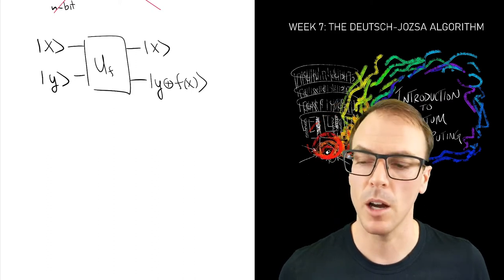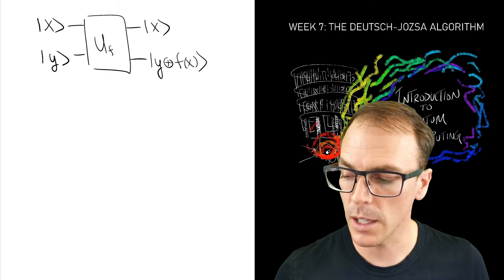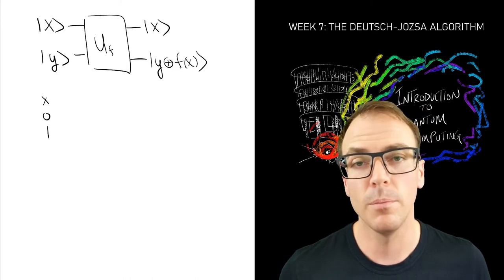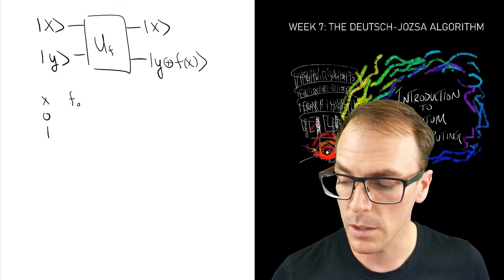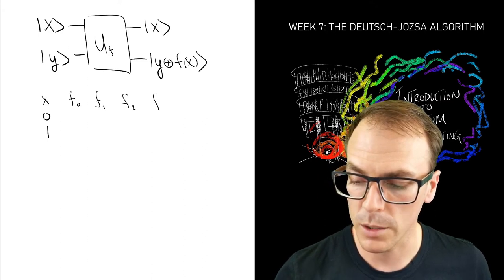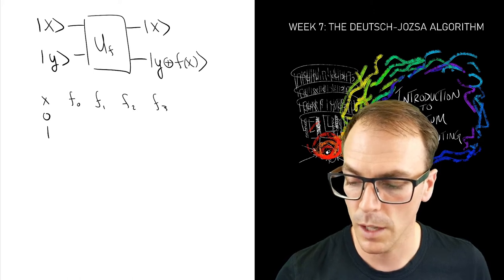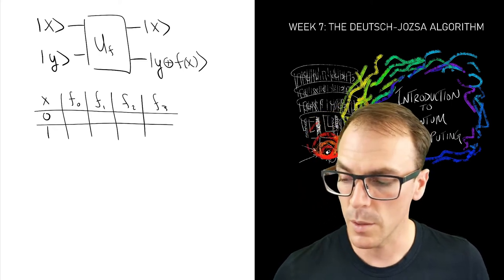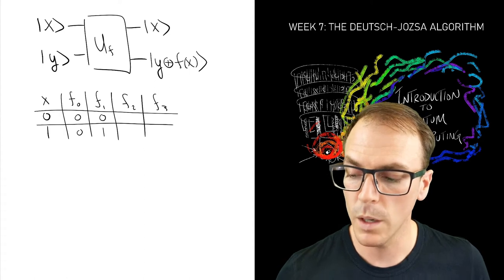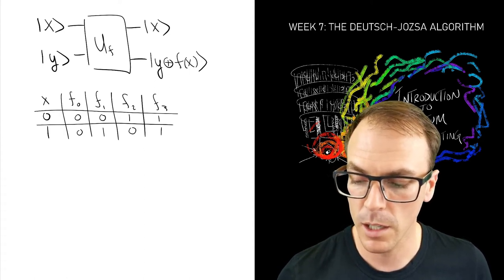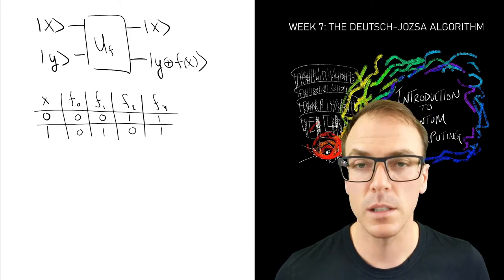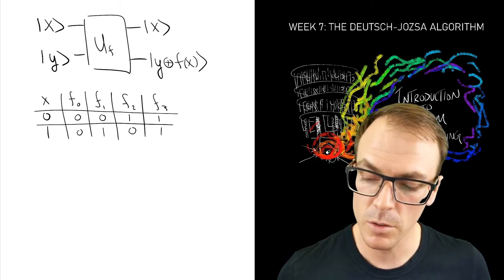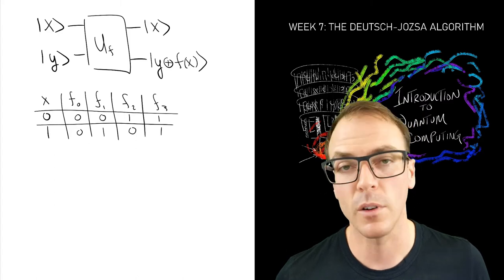Let's look at an example: the function of one bit, where the input can be zero or one. We saw that there were four possible functions, f_0 through f_3. f_0 is the all-zero function, f_1 is the identity, f_2 is the NOT function, and f_3 is the constant function that takes everything to one. So f_0 and f_3 are constant functions, and f_1 and f_2 are balanced.